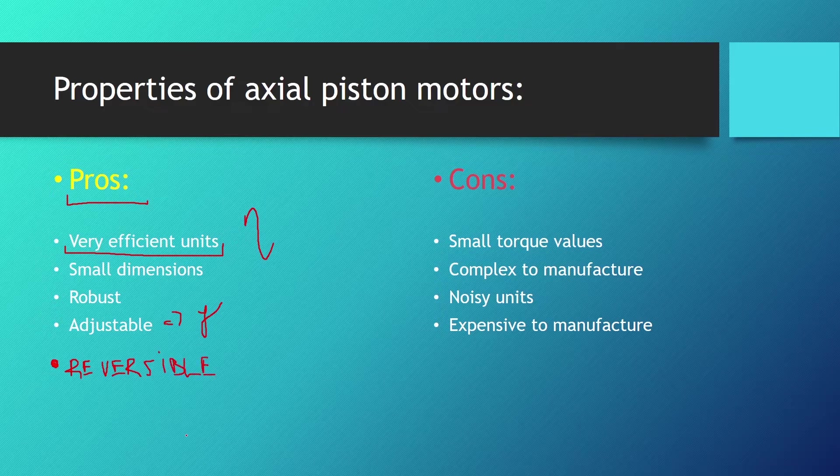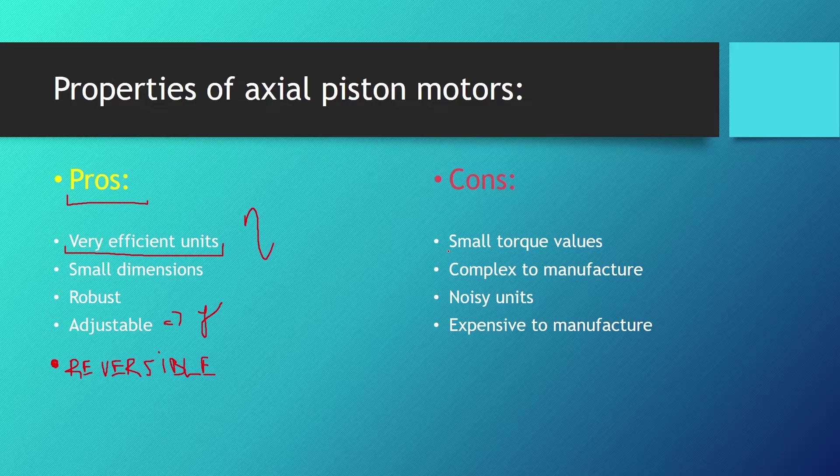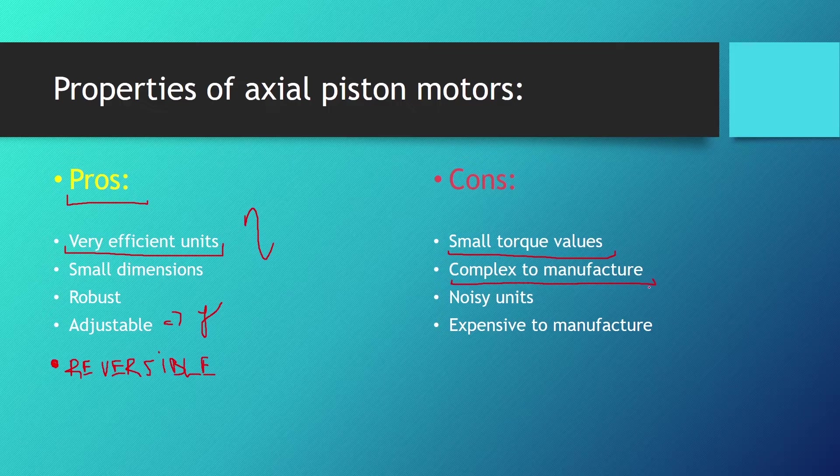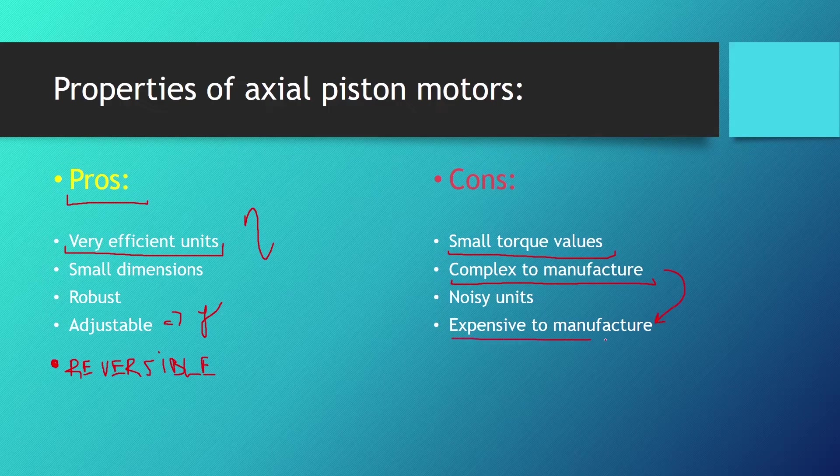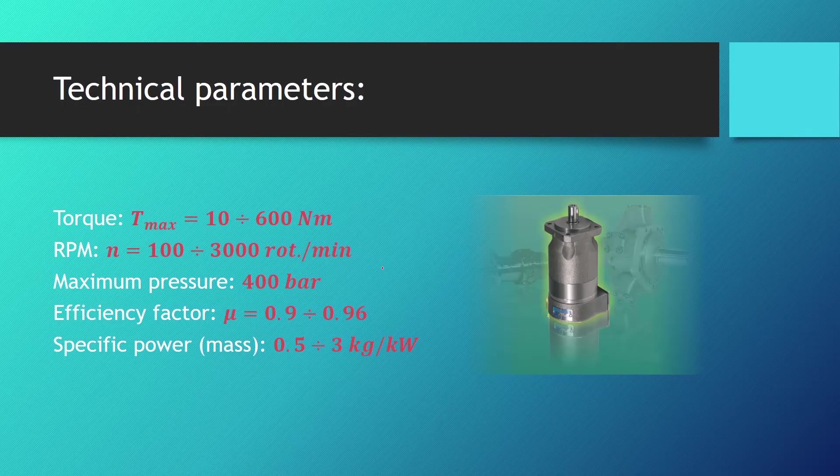The cons of axial piston motors are that they deliver small torque values, they're complex to manufacture, and the complexity of manufacturing also translates to them being very expensive. They're pretty noisy units.